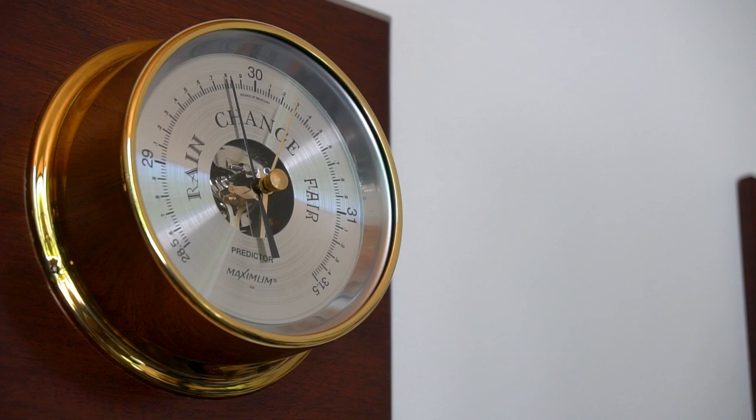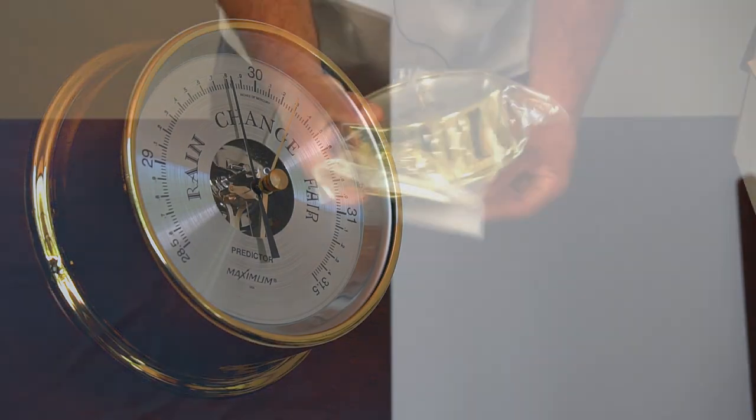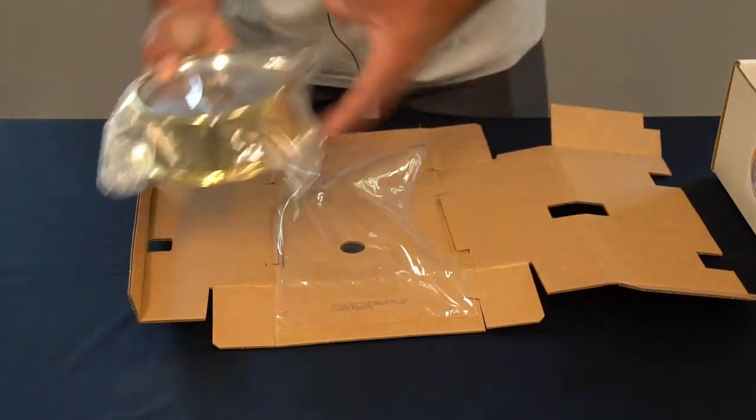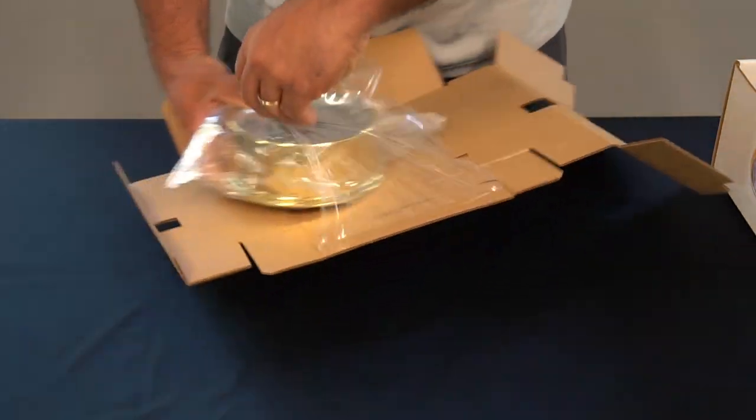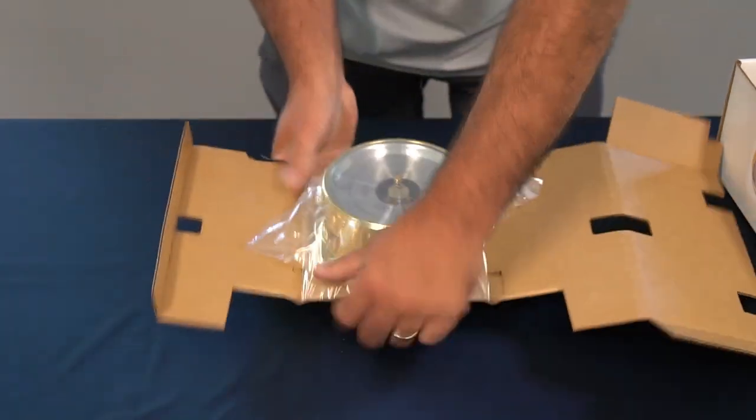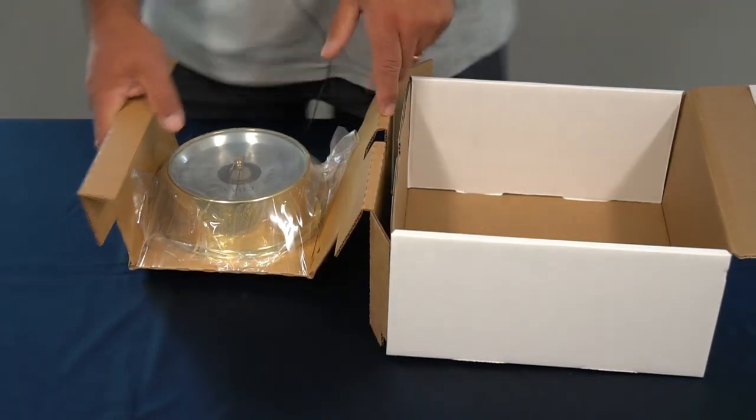If you would like to place the instrument back into its packaging, first make sure the cardboard tabs are up so the plastic is loose. Then slide the instrument back under the plastic, push the cardboard tabs down to tighten the plastic, and place it back into the box.